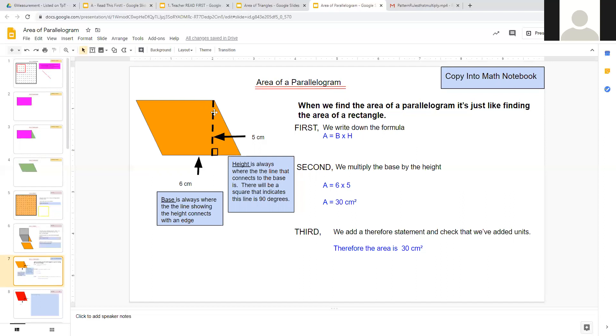So we're going to write down our formula, which is base times height. I always like to write area equals base times height; it just helps you get into practice for older grades. Then we multiply the base by the height. In this case, our base is six and our height is five, so six times five. And then we put our answer: area equals 30. We're measuring in centimeters, so we always make sure to put the units and the squared.